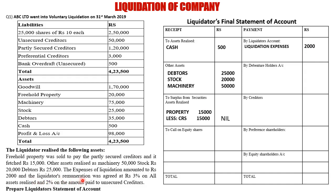The liquidator's remuneration was 3% on all assets realized and 2% on the amount paid to unsecured creditors. Under the liquidator's account, we need the liquidator's commission — but the amount isn't given directly; it's in percentage form. So we'll need to find the value using calculations.